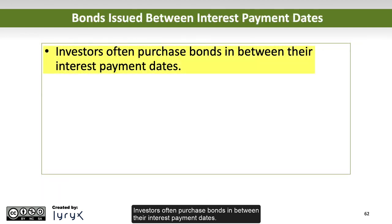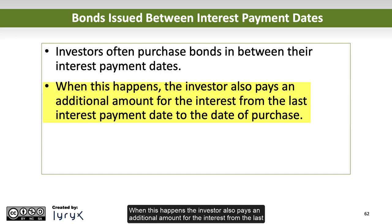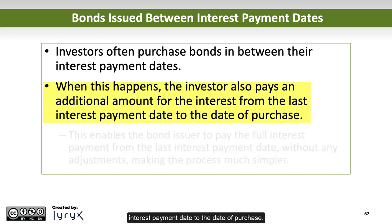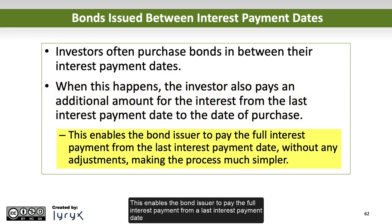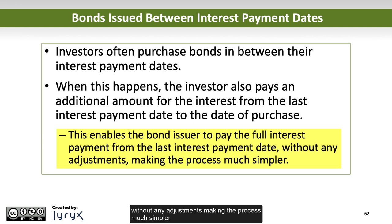Investors often purchase bonds in between their interest payment dates. When this happens, the investor also pays an additional amount for the interest from the last interest payment date to the date of purchase. This enables the bond issuer to pay the full interest payment from the last interest payment date without any adjustments, making the process much simpler.